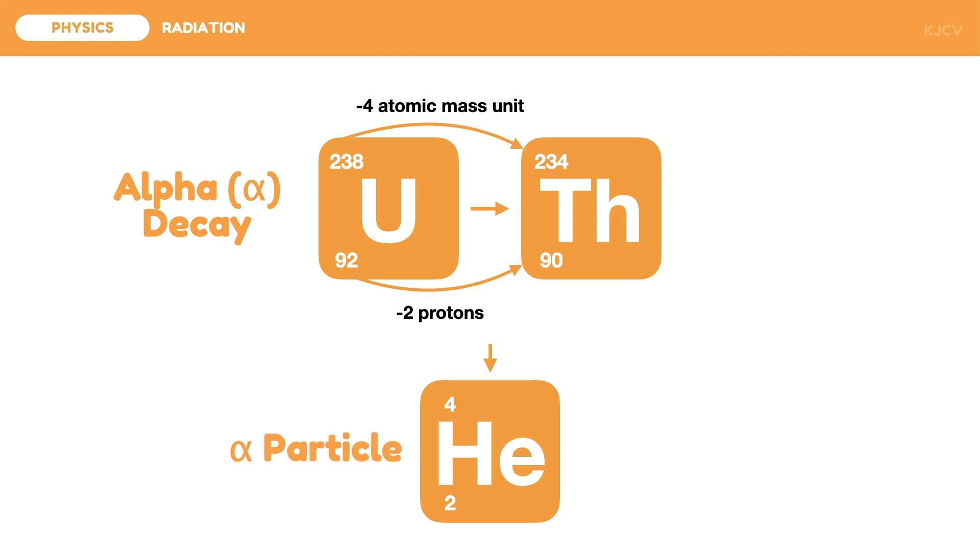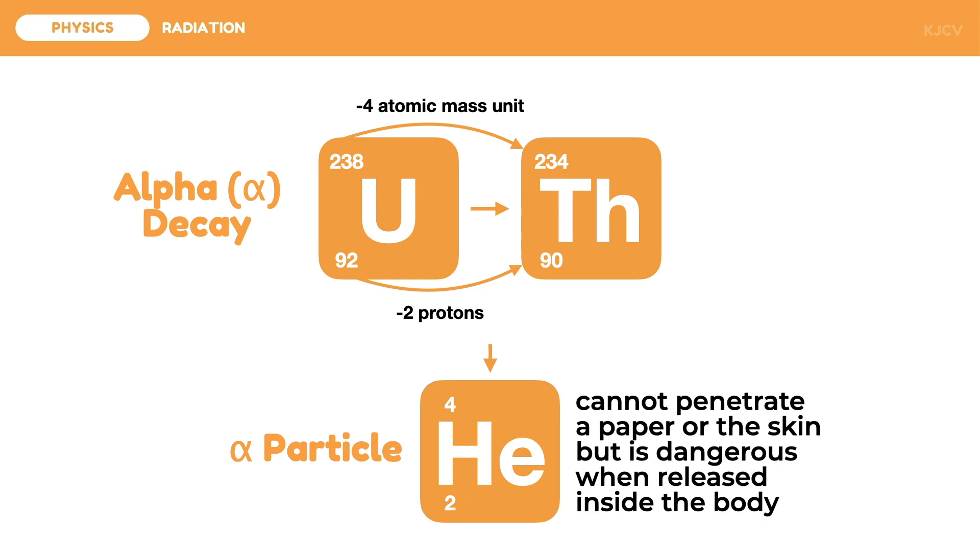This radioactive decay is what we call alpha decay. The radioactive particle here is the alpha particle. These particles cannot penetrate paper or the skin, but are dangerous when released inside the body. Another nuclear process which causes radiation is beta decay.